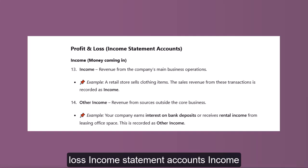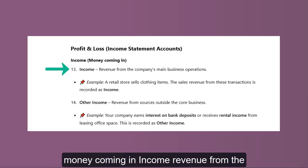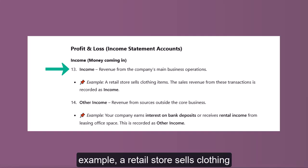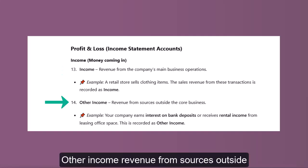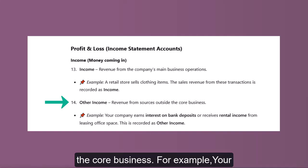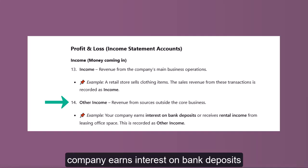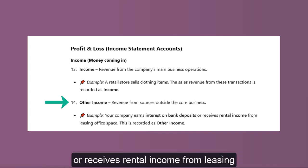Income — money coming in. Income: revenue from the company's main business operations. For example, a retail store sells clothing items — the sales revenue from these transactions is recorded as income. Other Income: revenue from sources outside the core business. For example, your company earns interest on bank deposits or receives rental income from leasing office space — this is recorded as other income.